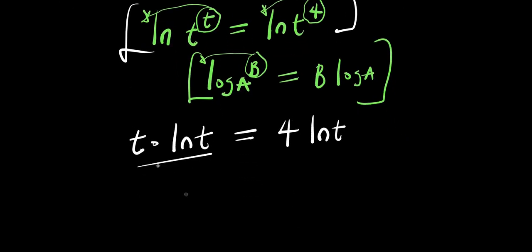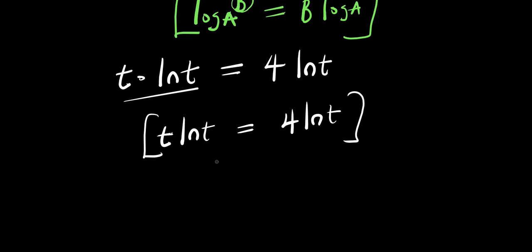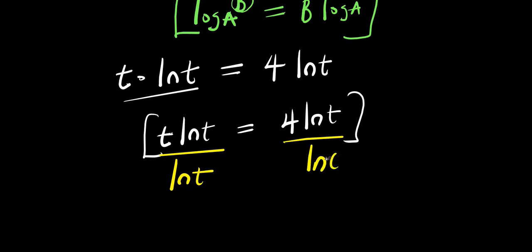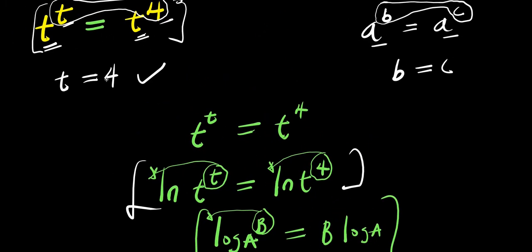Now what you can do is solve this in two different ways. The first method is to divide each part of this equation by ln t. You divide t ln t by ln t, and also divide 4 ln t by ln t. The ln t cancels on both sides, and what you are going to have left is just t equals 4. If you observe, this also gives you the same solution we had earlier on, which is t equals 4.